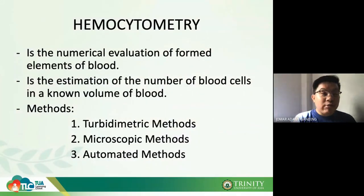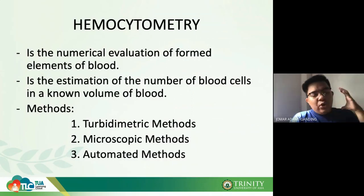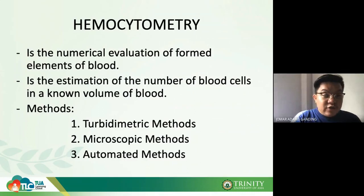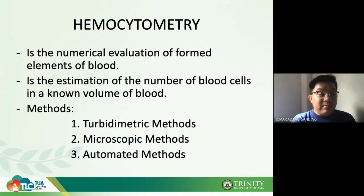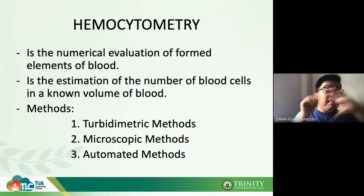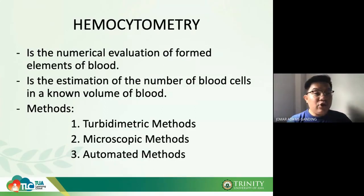In hemocytometry, it is the numerical evaluation of formed elements of the blood — the counting of your cells in your full blood. It is an estimation of the number of blood cells in a known volume of blood. We call it estimation because the absolute count would be best taken from an automated machine.